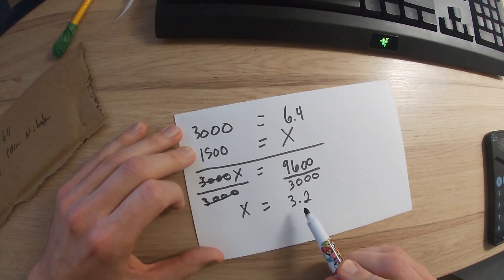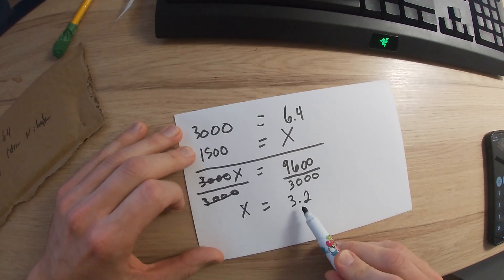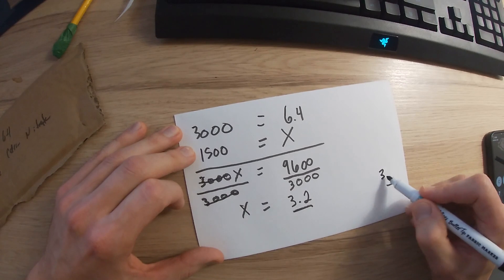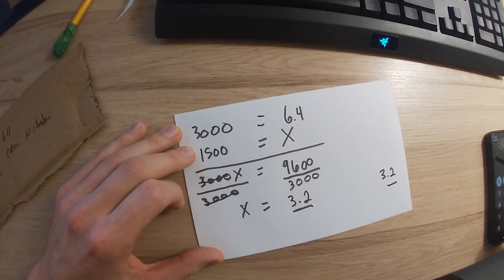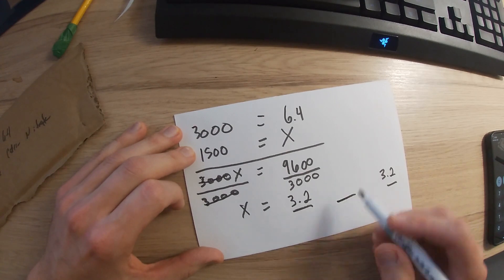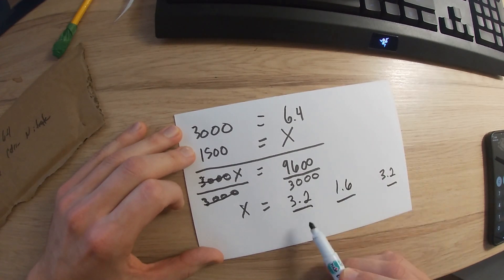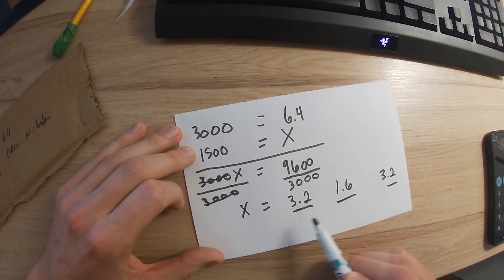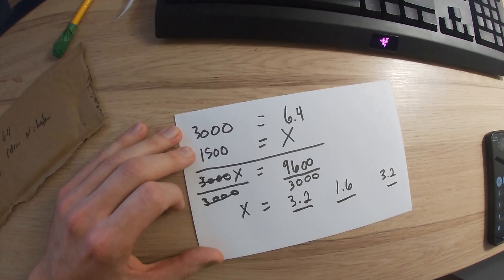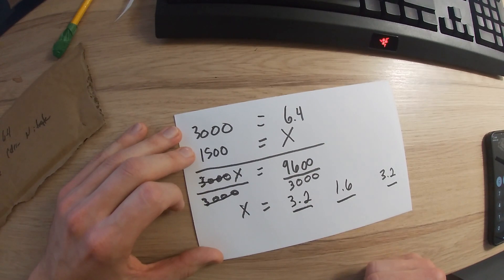We know that the calcium nitrate is always the same as the lettuce, and the magnesium is always half. So for this example: lettuce = 3.2, calcium nitrate = 3.2, magnesium sulfate = 1.6. Hopefully this clarifies the equation — if not, comment below and I'll make it even simpler. That's it for today, see you in the next one!